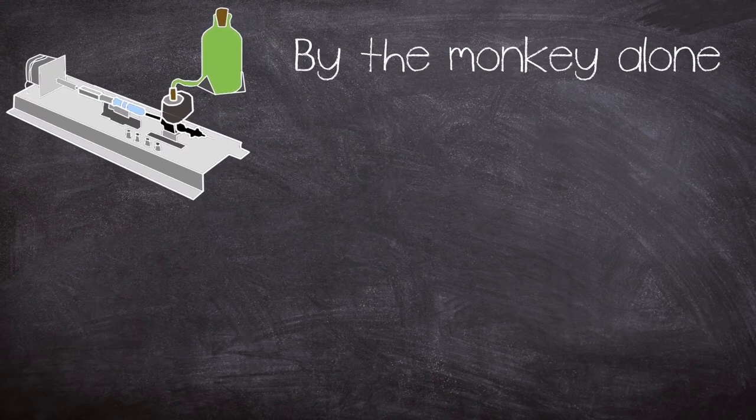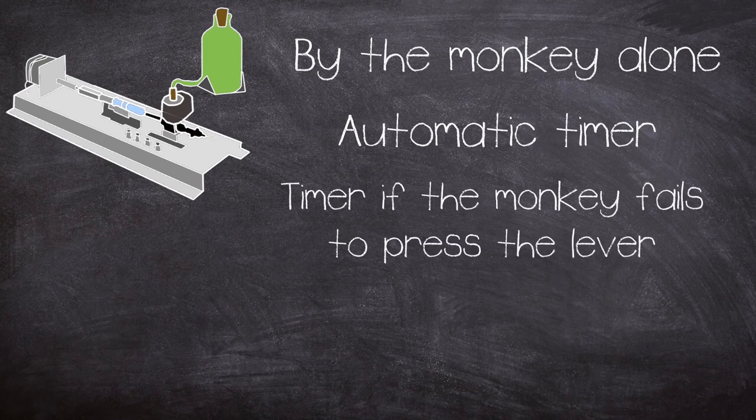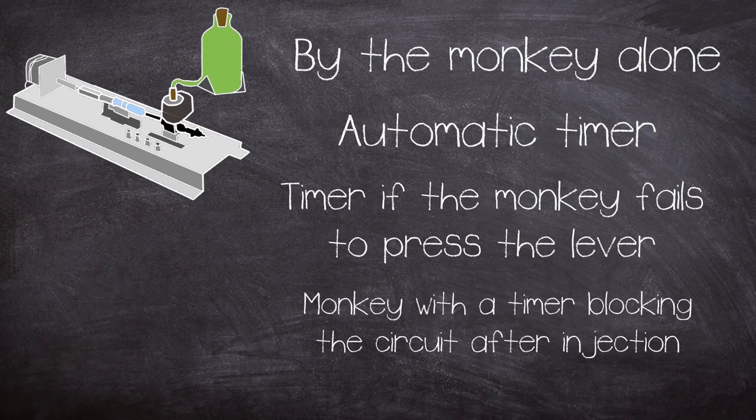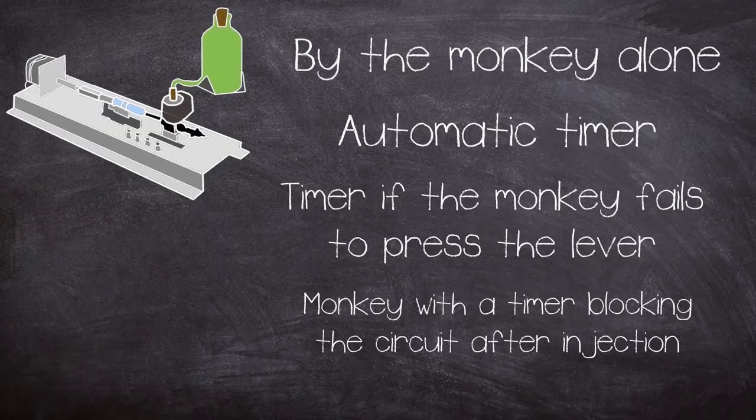The machine could administer a dose in four different ways: 1 by monkey alone, 2 by automatic timer, 3 by the timer if the monkey fails to press the lever within a predetermined time, and 4 by the monkey with a timer blocking the circuit after injection, preventing the monkey from taking the next injection until predetermined time had elapsed.